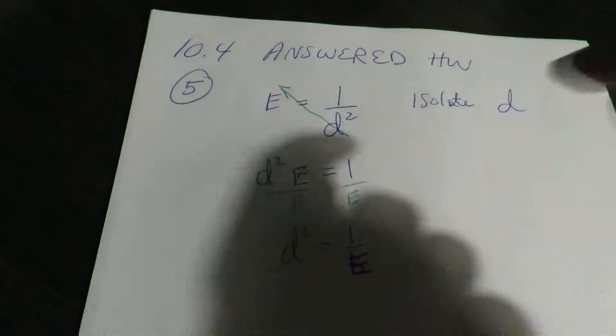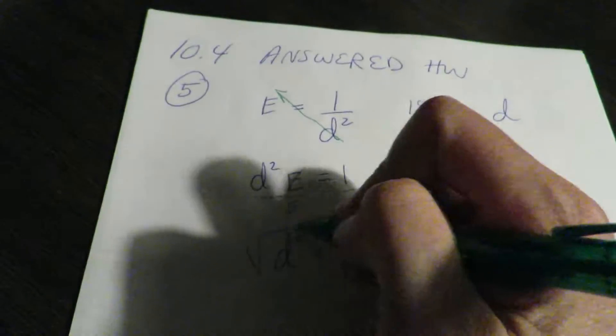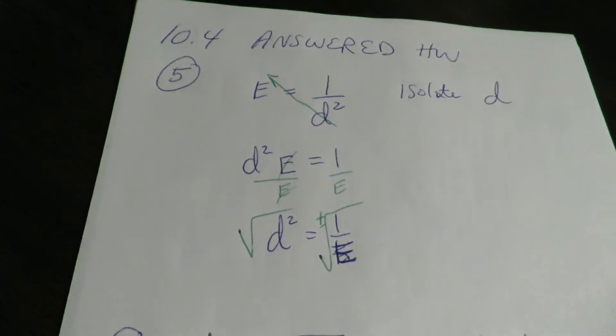Now I need to get the d by itself, so I have to take the square root. And when you take a square root, you put the plus or minus.